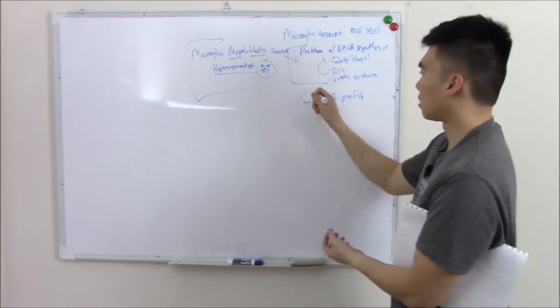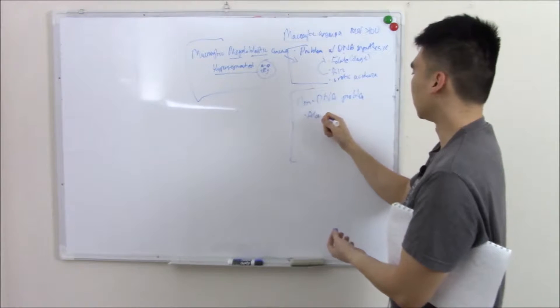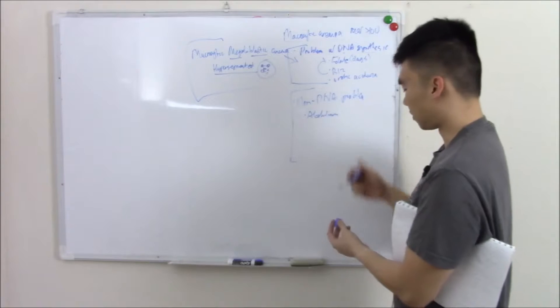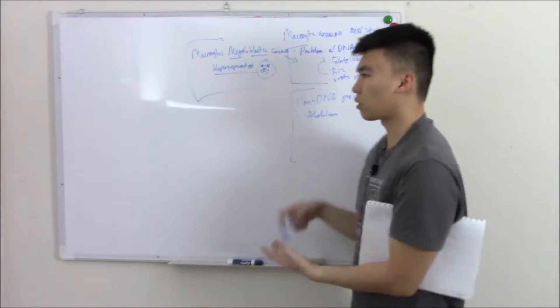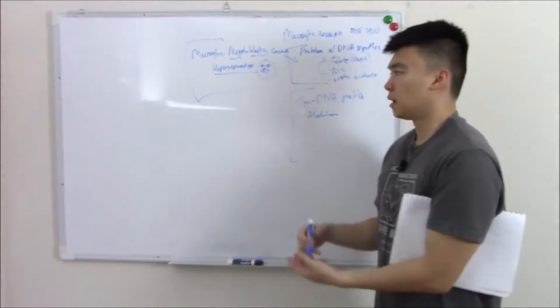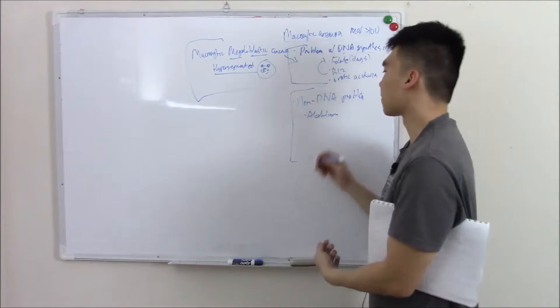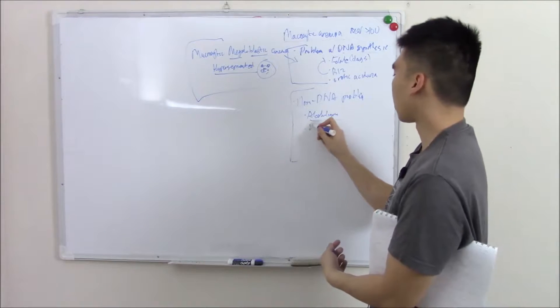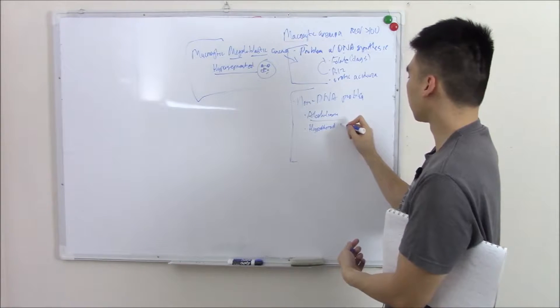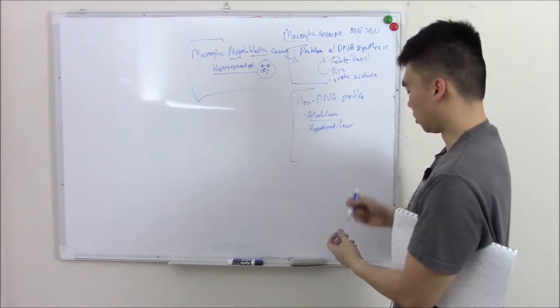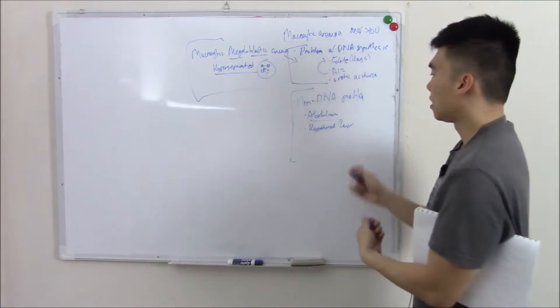What causes macrocytic anemias that are non-DNA related? Well, you can have alcoholism that's just a direct toxin. Alcoholism can cause microcytic anemias too—how do you differentiate? Just look at the MCV: is it microcytic or macrocytic? You can also have hypothyroidism and liver disease. This is due to cholesterol and phospholipid deposition into the cell which causes it to grow larger.